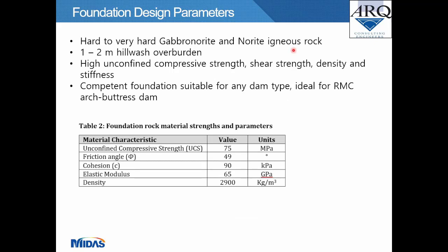The foundation rock mass consists of hard to very hard Gabbro-Norite and Norite igneous rock, with 1 to 2 metres of hillwash overburden. This material shows high unconfined compressive strength, shear strength, density, and stiffness — ideal for an RMC arch buttress dam. Key parameters from Table 2: unconfined compressive strength 75 MPa, friction angle 49 degrees, cohesion 90 kPa, elastic modulus 65 GPa, and rock mass density 2900 kg/m³.